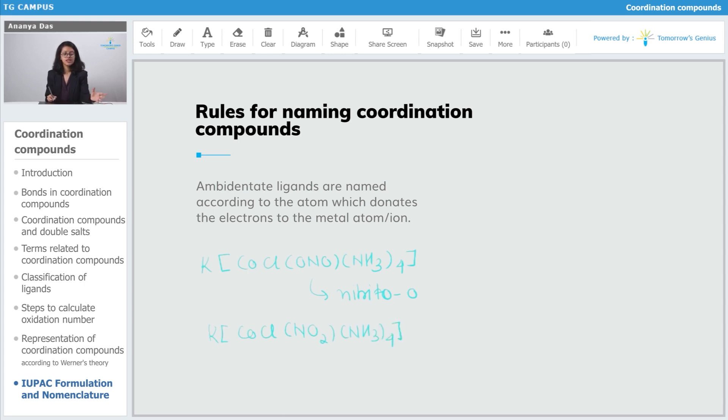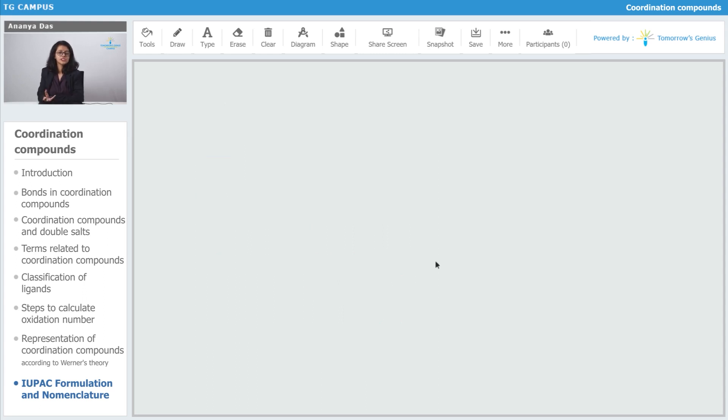Accordingly you can name the entire complex. Let us try to name an entire complex which has an ambidentate ligand.